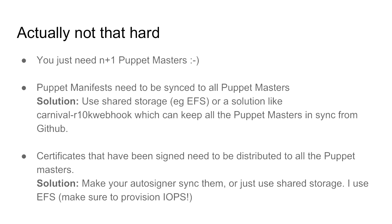The good news is it's not very hard — you basically just need N+1 Puppet masters. The catch is you need to make sure a few things are shared: all configuration must be available to all masters and synced at the same time, so you don't have one server running config from 24 hours ago and another from five minutes ago. You also need to make sure certificates are signed and distributed across all Puppet masters, because if one server doesn't know about an existing signing request, it won't be able to authenticate and provide configuration.